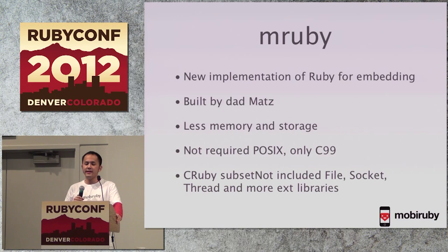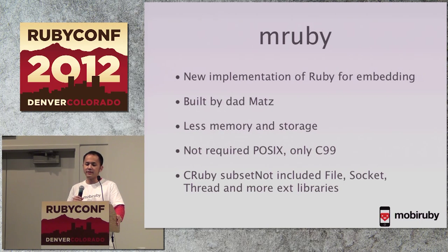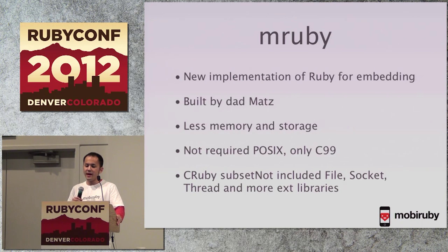mRuby is the latest Ruby implementation by Matz. I first heard about mRuby in 2010 when it was called LiveVM. mRuby is designed for embedded systems, meaning small memory and modular structure. mRuby is more compact than other Ruby implementations. On OS X, the mRuby binary is around 406 kilobytes, but CRuby is over 2 megabytes. mRuby can be even smaller because of its modular structure — if you want to remove the math library, you can remove it easily.